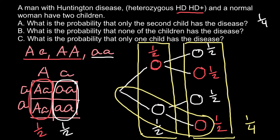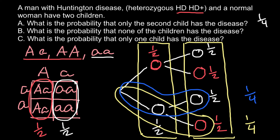Question B: what is the probability that none of the children has the disease? There is only one variant where the first child is unaffected and the second child is also unaffected. Out of four total variants, only one meets this requirement. So the probability is 1 out of 4, or one quarter. The answer to question B is one quarter.